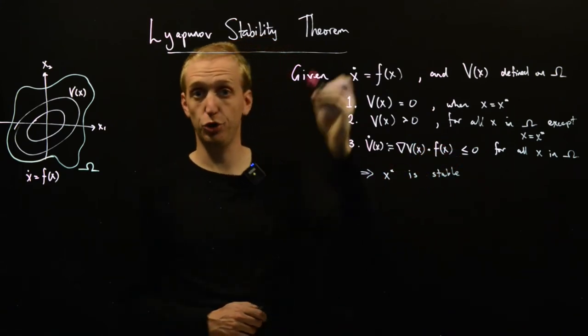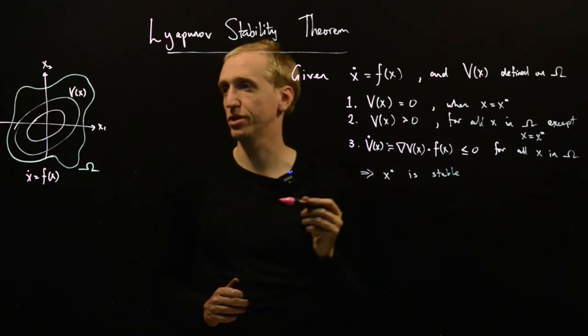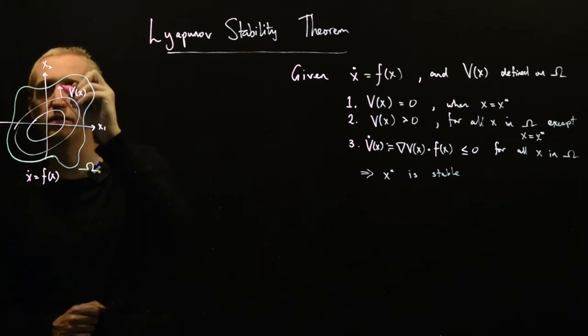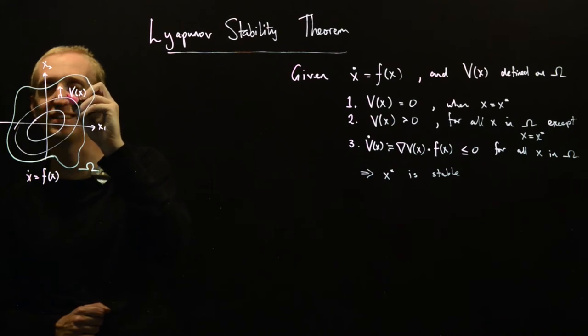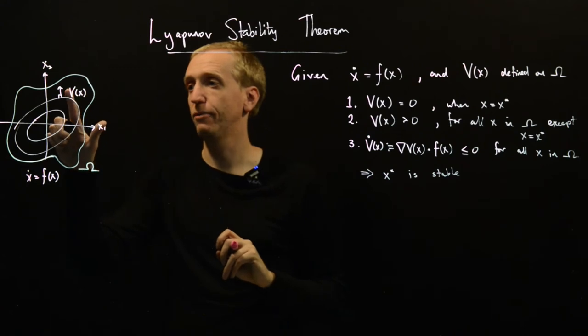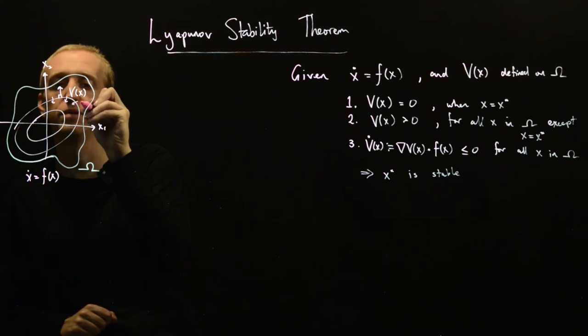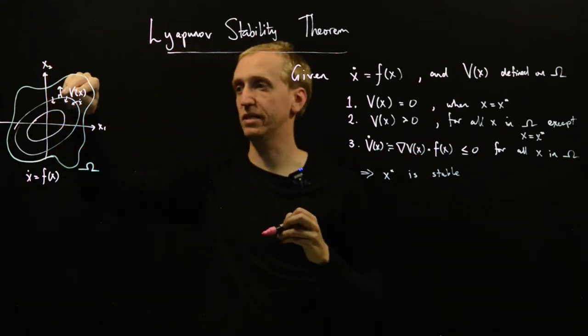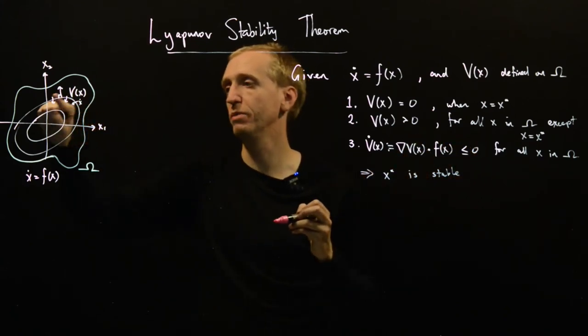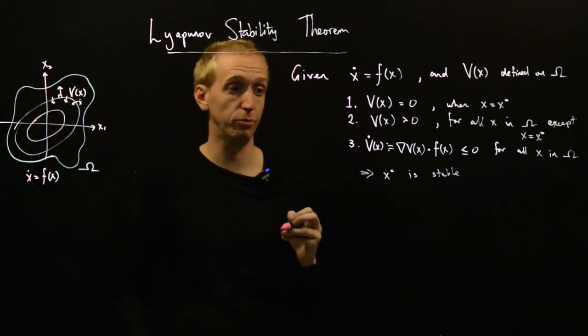So these are the conditions for stability using Lyapunov functions. And if you remember here, this was just corresponding to grad v being these vectors that were perpendicular to the level curves of the Lyapunov function. If I dot product those with my directions for x dot, well, if this is negative, it just means that we're moving to a contour of lower energy. So being less than or equal to means we could be moving along the contour, but we're never moving away and getting further away from the equilibrium point.